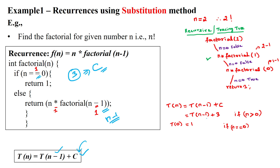They have considered the constant value is 3 by considering the primitive operations: this multiplication, this subtraction, and the condition checking n equal to 0. So they have taken these primitive operations as 3 units of time. That is why 3 when n greater than 0. If n equal to 0, it will take 1 unit of time for checking the condition. So 2 steps are there, and 2 is considered as the smallest constant 1. That is what is given here.